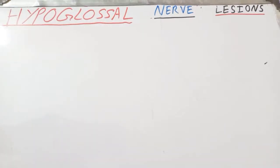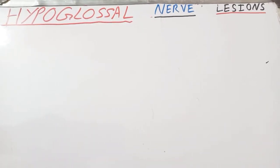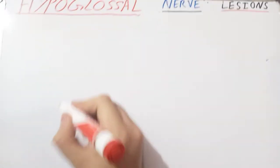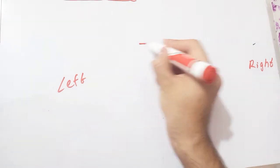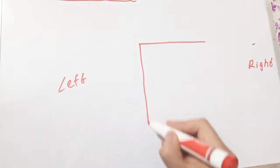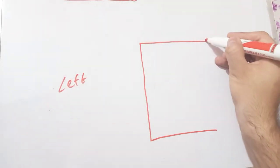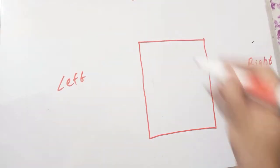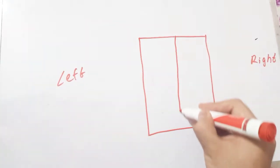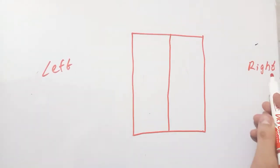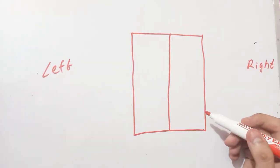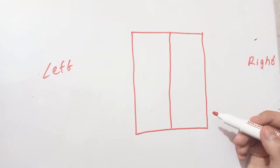Most commonly the lesion occurs where it exits the posterior cranial fossa through the hypoglossal canal. Let's draw a model of the tongue here. This side represents the left side and this is the right side. This box represents our tongue — this side of the box represents the left-sided muscles of the tongue, both the intrinsic and extrinsic muscles, and the right-sided box represents the right side of the tongue.